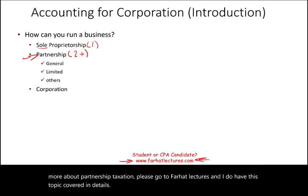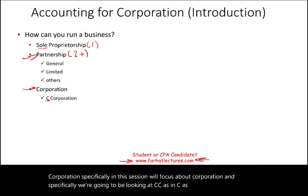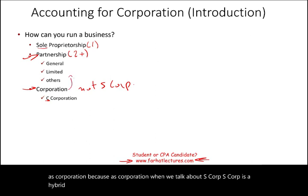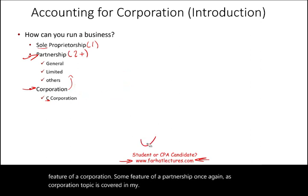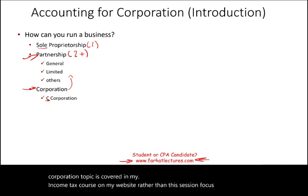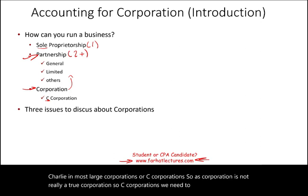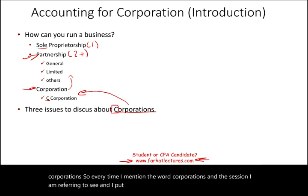In this session, we'll focus specifically on C Corporation — C as in Charlie — not S Corporation. S Corporation is a hybrid between a corporation and a partnership, with some features of each. Most large corporations are C corporations. Every time I mention corporations in this session, I am referring to C, and I put C in capital here to remind you this is a C and not an S.